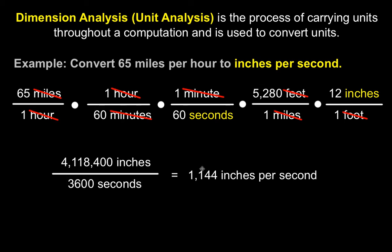Continue to do the calculation. And 65 miles per hour is the same as 1,144 inches per second. So I hope those two examples using dimensional analysis show you how to convert units and also show you how to continue carrying those units throughout the entire computation process.